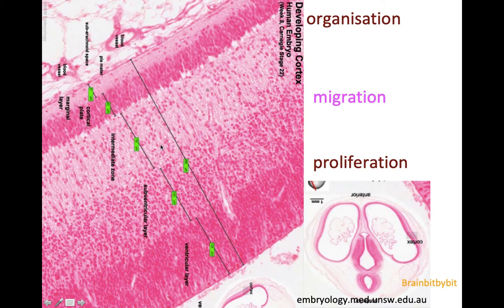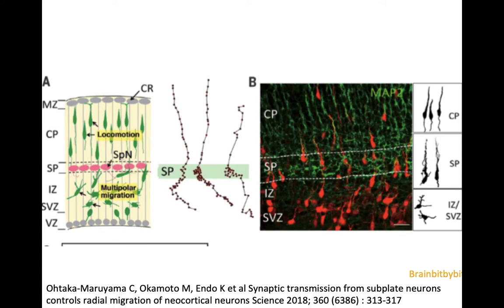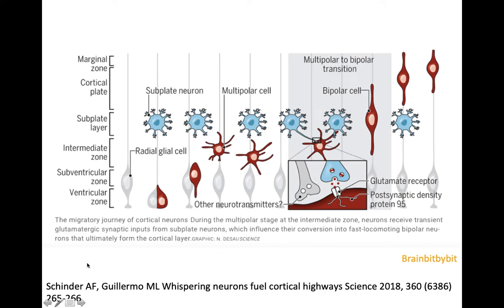The interesting thing about the migration of the glutamate neurons is that during the journey towards the cortex, they change in shape. Just below the cortical plate is the subplate, which serves as a kind of waiting room for the neurons before they enter the cortex. In this subplate are very early migrated, so-called firstborn neurons. In an article in Science 2018, they tracked three neurons on the way towards the cortex, and another group described that the neurons in the subplate had transient contact with the migrating neurons coming from the ventricular zone.